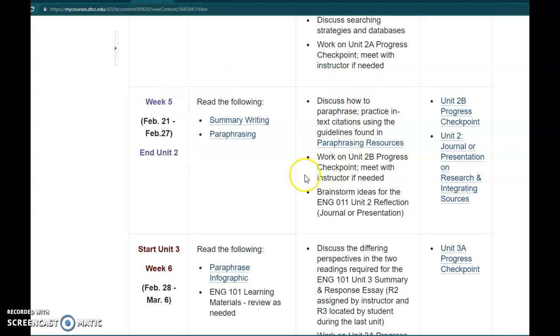We're going to be talking mostly about paraphrasing in this unit. You can see that the things you have to do are the Unit 2B Progress Checkpoint and the Unit 2 Journal or Presentation on Research and Integrating Sources. We're already doing that reflective journal because we're already ending unit two.